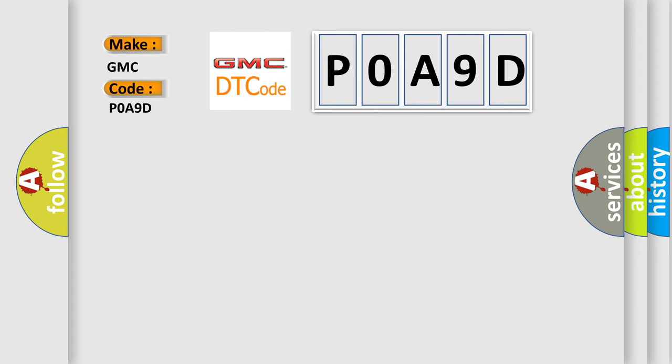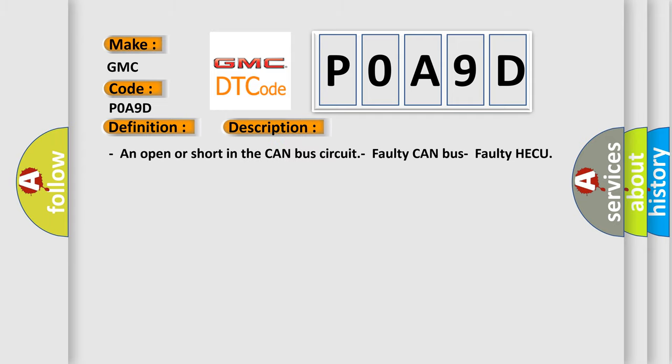The basic definition is CAN bus off failure only system with TCS. And now this is a short description of this DTC code: an open or short in the CAN bus circuit, faulty CAN bus, faulty HECU.